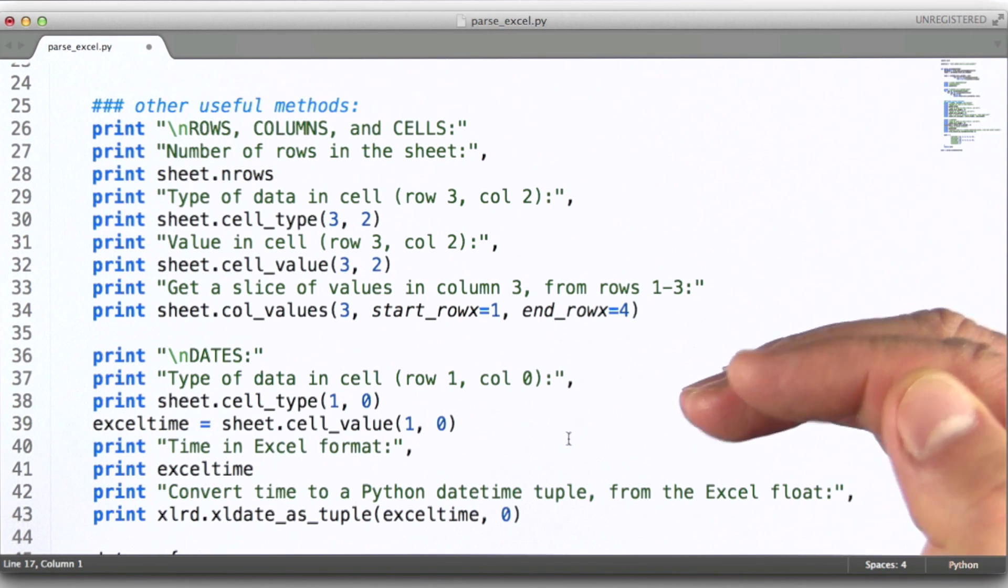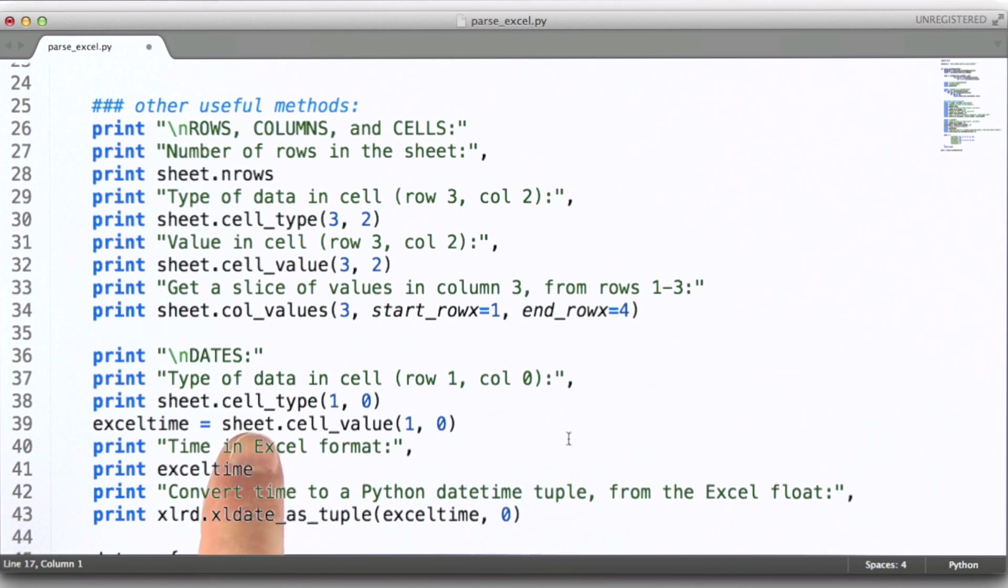and three, up to row four, but not including row four. And I want to take those three values sliced out of that particular column. And then here, we are doing something very similar to what we did before, which is actually checking the type of the value in a given cell. But in this case, we have a date in this cell.